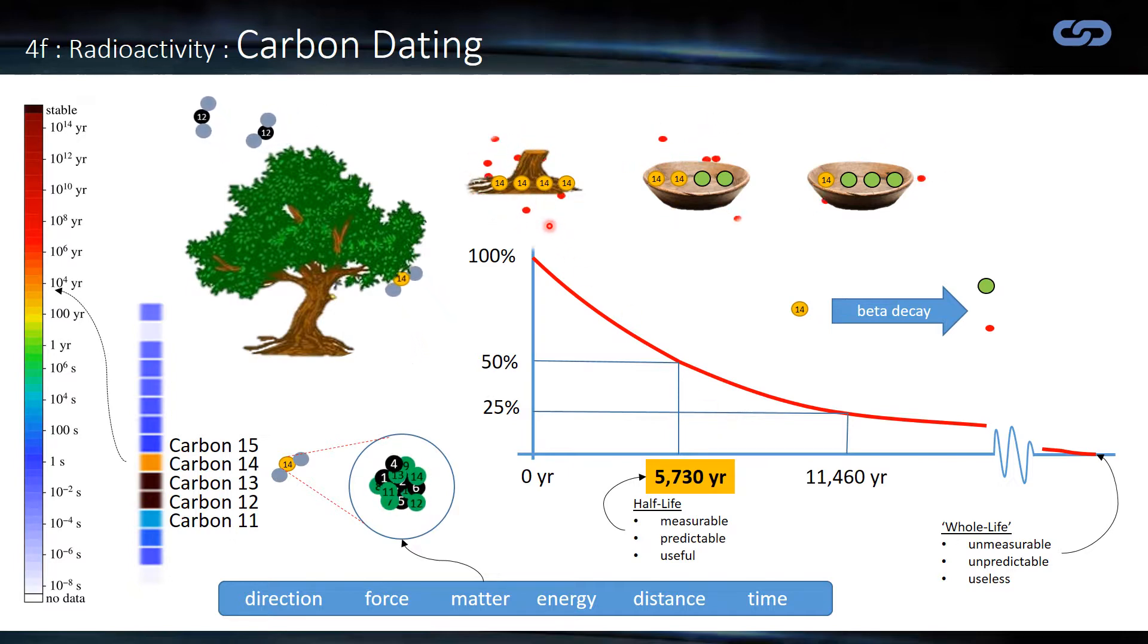Now, just to come back to this, so the key event is the zeroing of the clock. It's effectively a clock that ticks along and the clock is zeroed by it being cut off from the carbon cycle. So the half-life is easily measured, very easily measurable. We just have to use a Geiger counter. It's predictable. It's one of the most predictable processes we have, and it's very useful because it allows us to date all sorts of artifacts to a range of about 50,000 years.